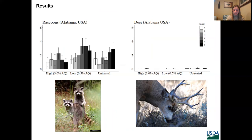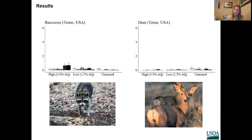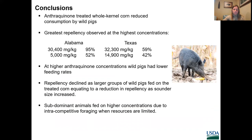In Alabama, raccoons showed no difference in rates of feeding between high and low-treated corn compared to untreated corn. Deer were rarely observed by the cameras, but nonetheless, deer fed on high and low-treated corn at a lower rate than untreated corn. In Texas, raccoons fed on the high-treated corn at a lower rate than untreated corn when averaging across nights, while the rate that raccoons fed on low-treated corn and untreated corn were similar. The rates that deer — both white-tailed deer and mule deer — fed on high and low-treated corn were lower than the untreated corn.